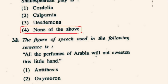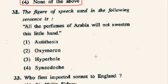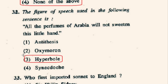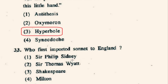Question number 32: The figure of speech used in the sentence 'All the perfumes of Arabia will not sweeten this little hand' is what? The poetic device hyperbole has been used in this sentence. Hyperbole is a figure of speech in which a statement is made emphatic by overstatement.